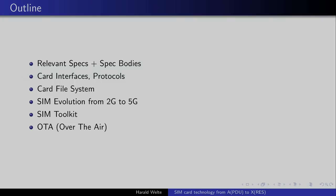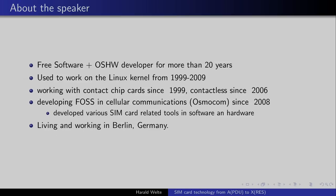So what are we going to talk about in the next 45 or so minutes? We'll cover the relevant specifications and specification bodies, the interfaces and protocols related to SIM cards, the file system that exists in SIM cards, and the evolution of SIM cards from 2G to 5G — basically from 1991 to 2018. We'll also talk about SIM toolkit, over-the-air technology, and a little bit about eSIMs, the embedded SIMs.